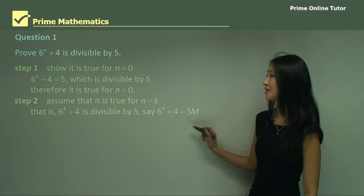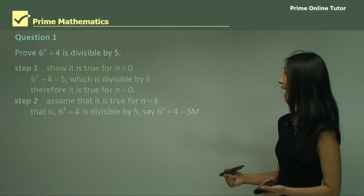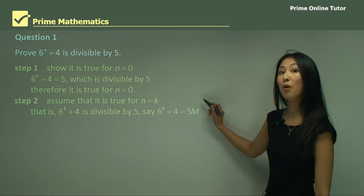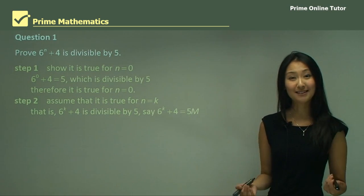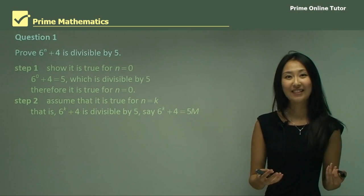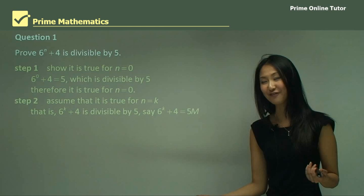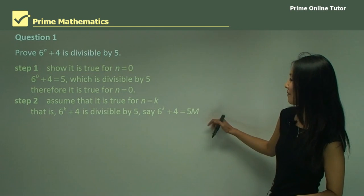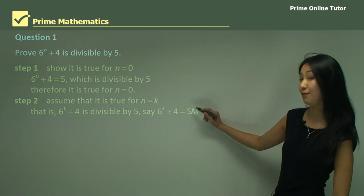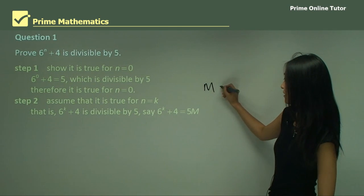Using that assumption we can say that six to the power of k plus four equals five m. If it's divisible by five, it means it's going to be any integer always multiplied by five. If something's multiplied by five then we have to assume that it can also be divided by five. So this is why we say six to the power of k plus four equals five m, where m is just any other integer.